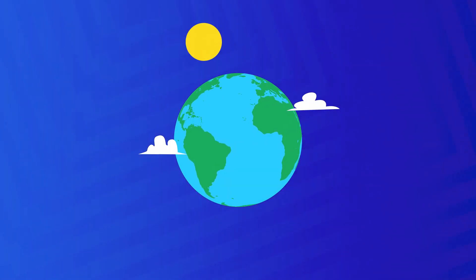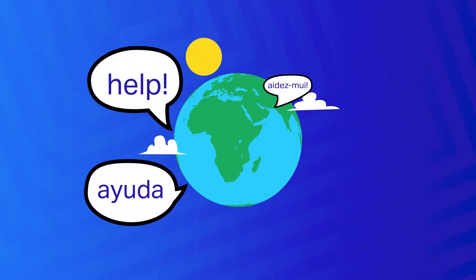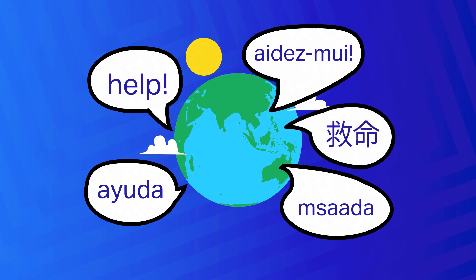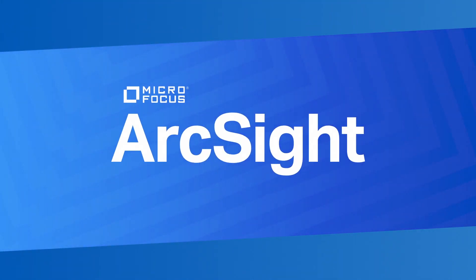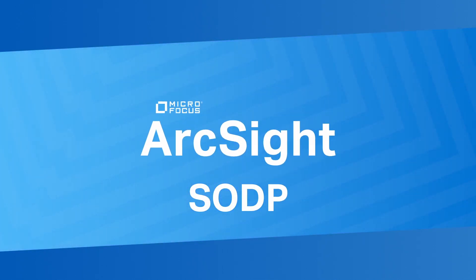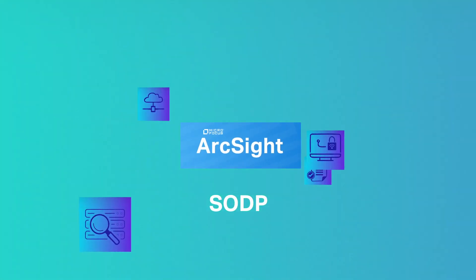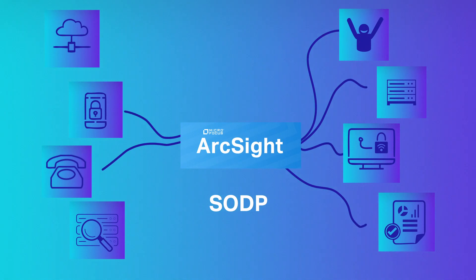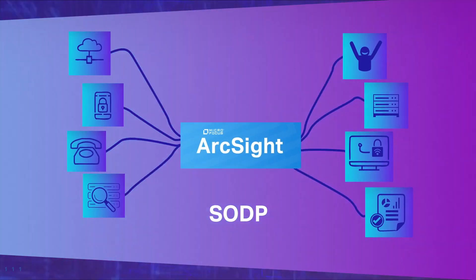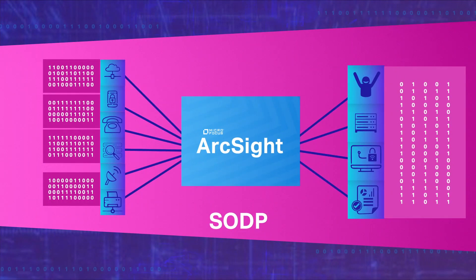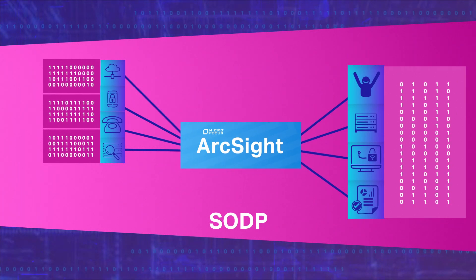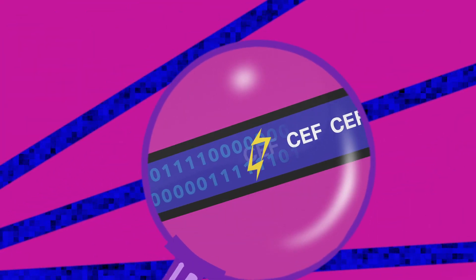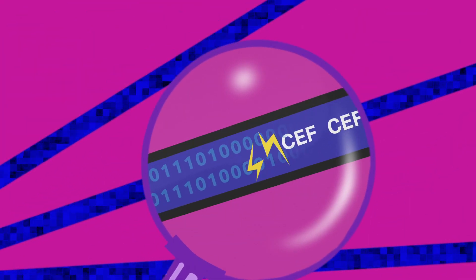A cry for help rose from IT and SecOps teams across the globe, and Microfocus has answered that call with its Security Open Data Platform for ArcSight, also known as SODP. Our customers asked for an open solution to collect and distribute data — we delivered. They asked for a way to collect data that can scale as fast as they grew — it's here. They asked for a solution that could normalize, parse, and enrich all the different types of data into a common format — we delivered that too.